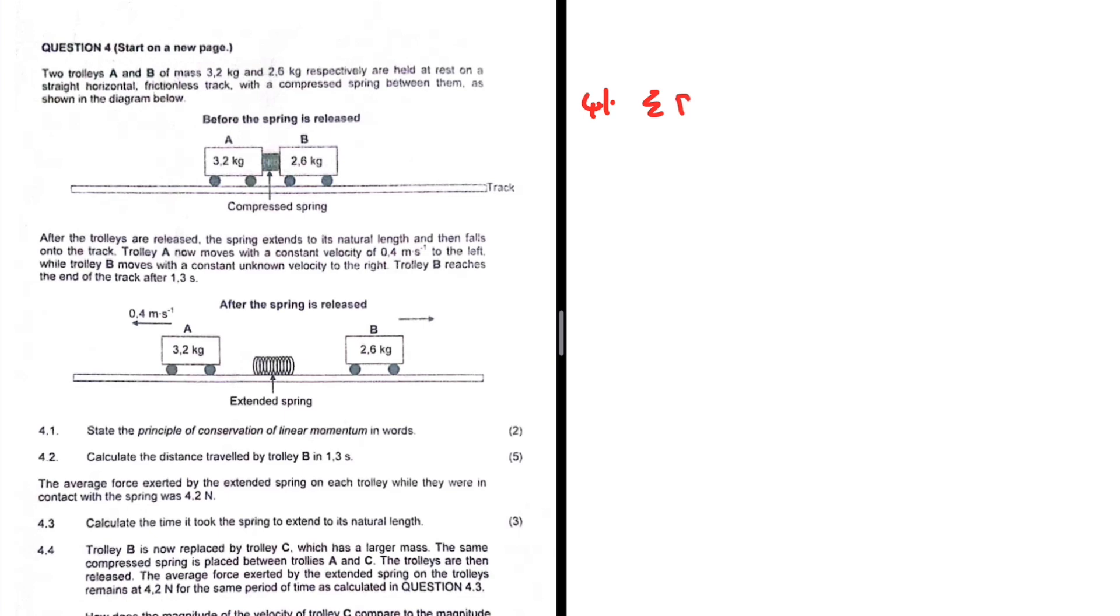What are we saying? Saying that the total linear momentum in an isolated system remains constant. The sum of the momentum before a collision or an explosion, not only a collision, right? Because momentum is also conserved in an explosion, as we will see in this question.